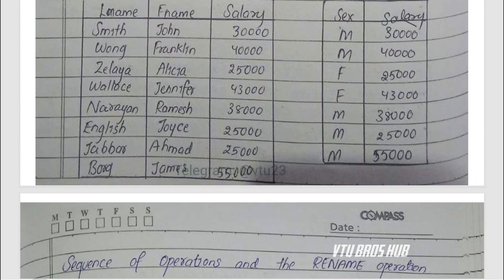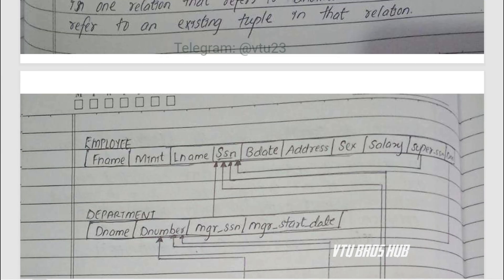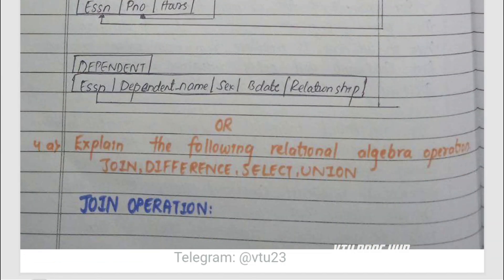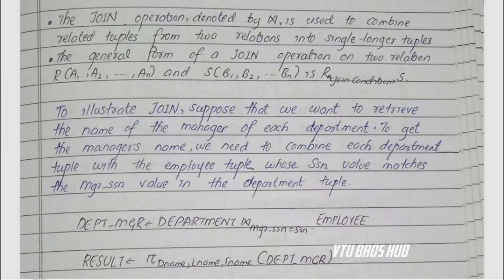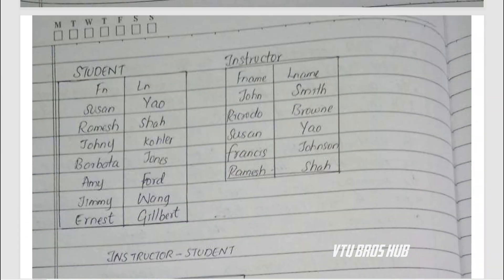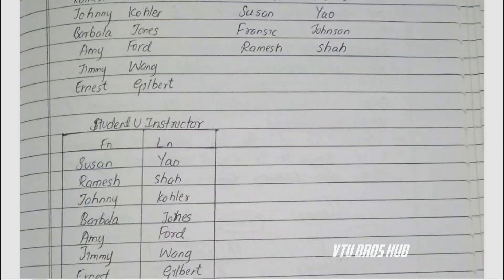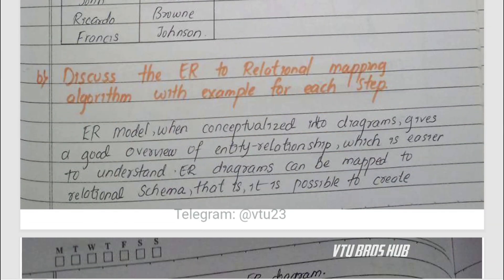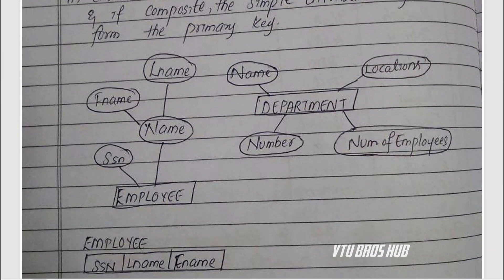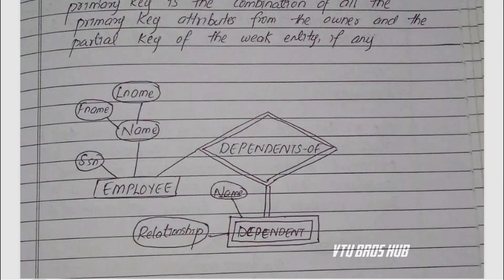Module 1: database basics and ER modeling. Start with the story of how databases evolved. Focus on characteristics, advantages, and the 3-schema architecture. Master ER diagrams — strong and weak entities, relationships, generalization, and specialization.